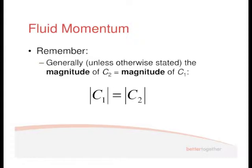The last thing to remember is that you can generally assume the magnitude of the velocity at the input is the same as the magnitude at the output. If you have a flow of 30 metres per second going in and the area doesn't change, you'll generally have 30 metres per second going out. The magnitude of C2 equals the magnitude of C1. There may be different angles — so the X and Y components differ — but the magnitudes are the same.